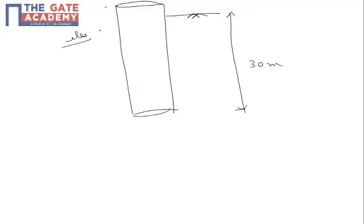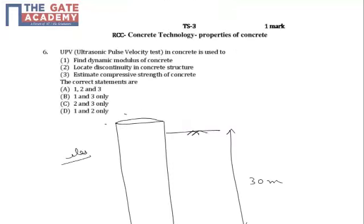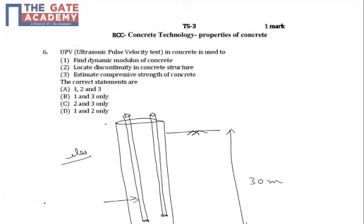So what is done during casting of these piles: two inlets are left with the help of PVC pipes. Through these PVC pipes, one transmitter and one receiver are sent deep inside the pile.